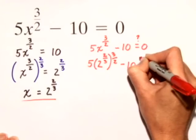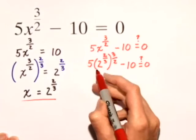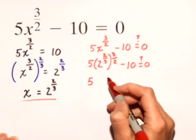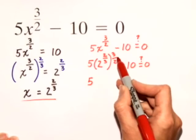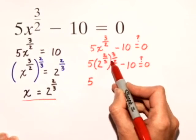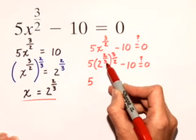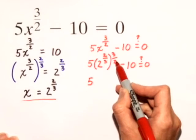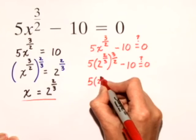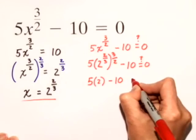I should put a question mark here because I'm checking. So we have 5 out in front of the parentheses, 2 raised to the 2 thirds, raised to the 3 halves. Notice when I multiply the exponents, I just get 2 thirds times 3 halves, which is equal to 1. So I have 5 times 2 minus 10.